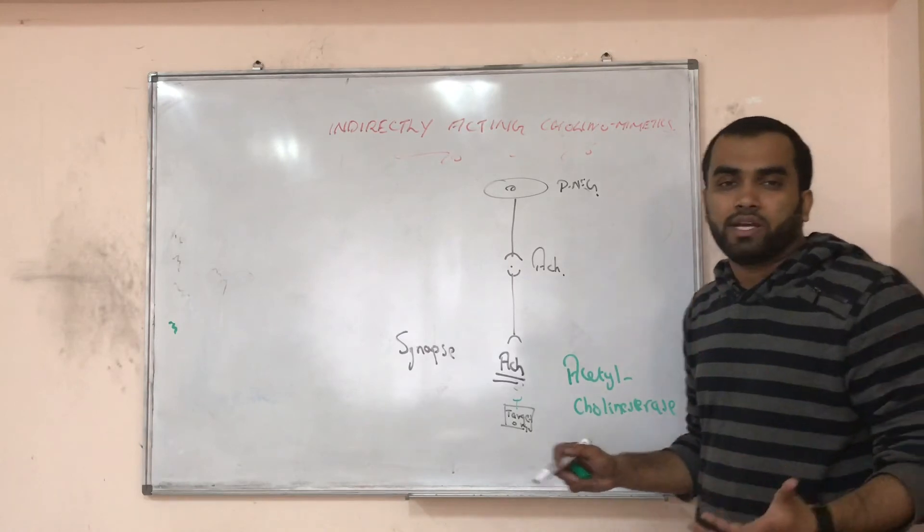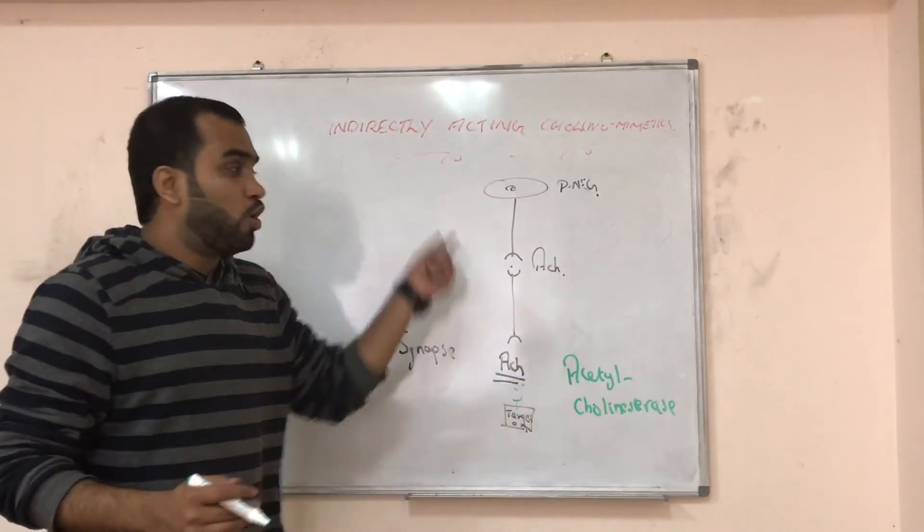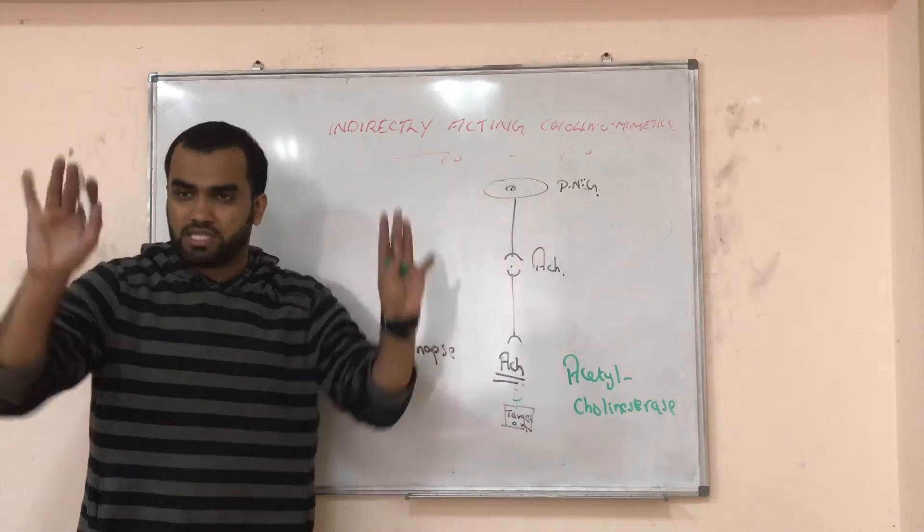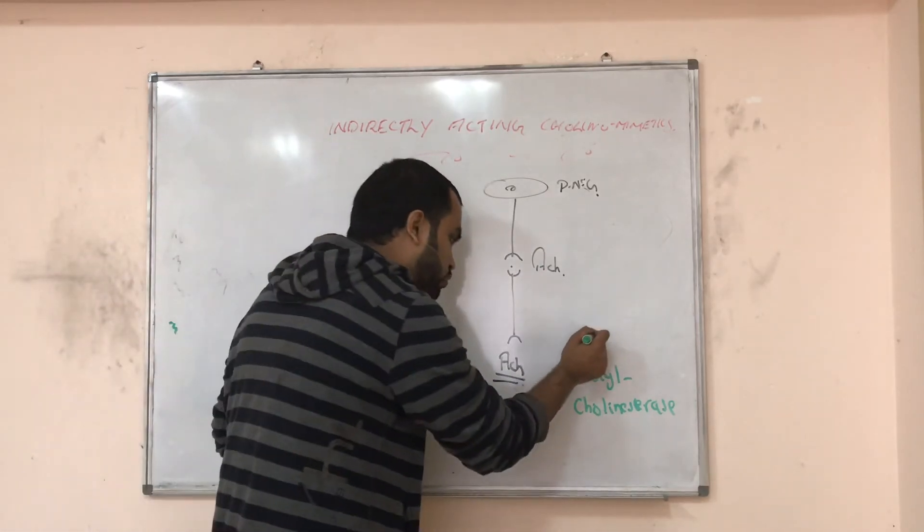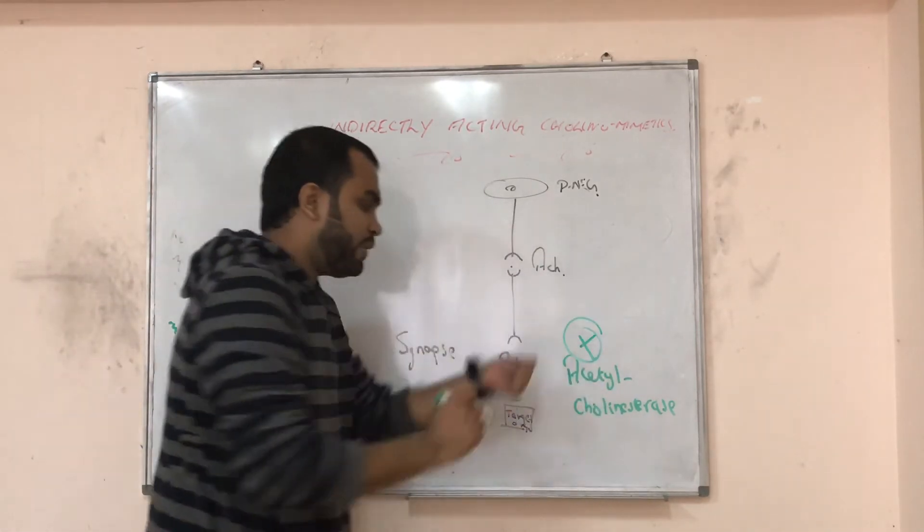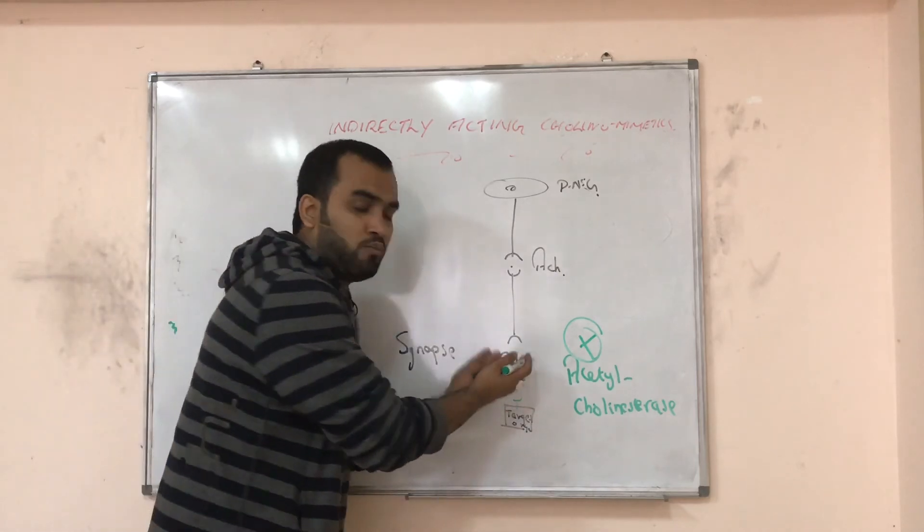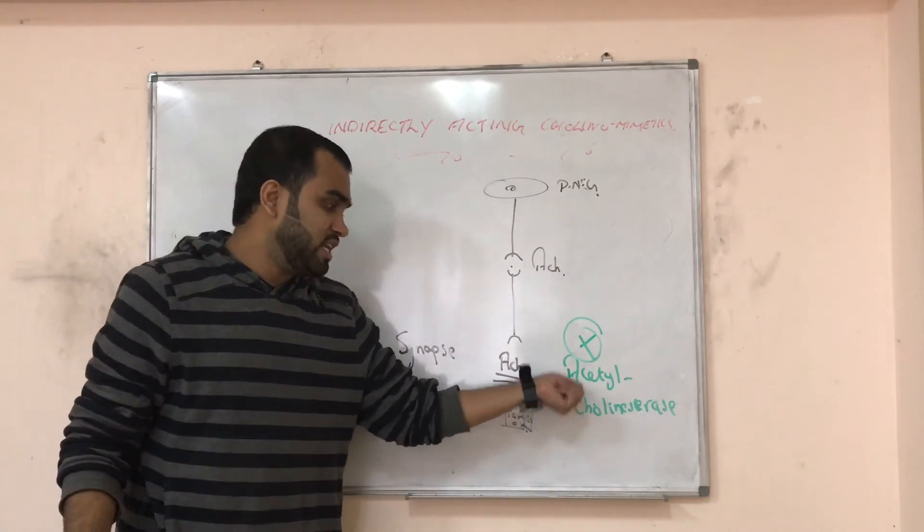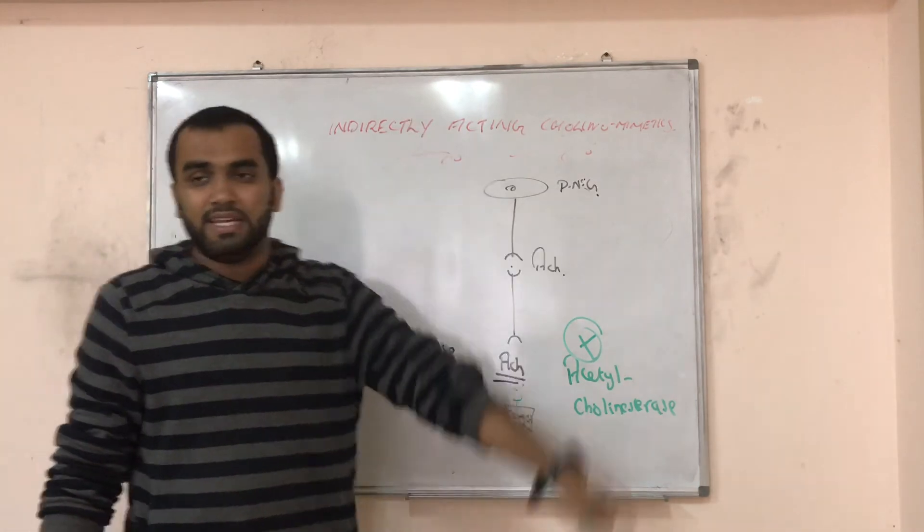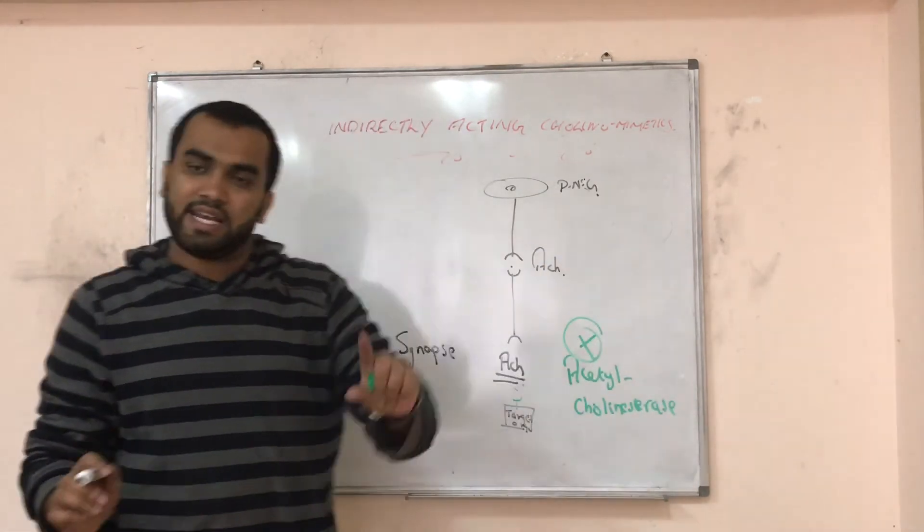They are eating acetylcholine. So what we can do? In cholinomimetic, we have to increase acetylcholine. So the other thing we can do is if we block this enzyme, we can have more acetylcholine. So the second measure is blocking acetylcholinesterase. That is called indirectly acting.